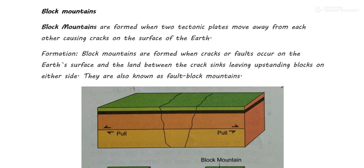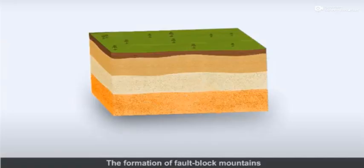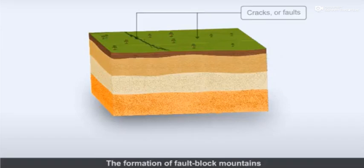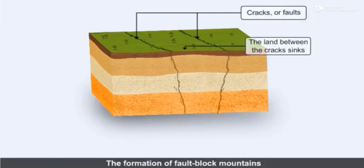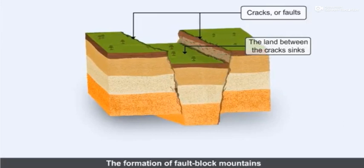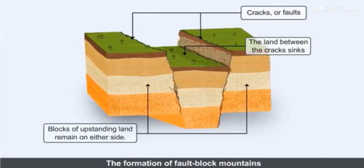Let me make you understand with the help of this demonstration. Block mountains are formed when cracks or faults occur in the earth's crust, just like this. The land between the cracks sinks, leaving the upstanding blocks on either side.